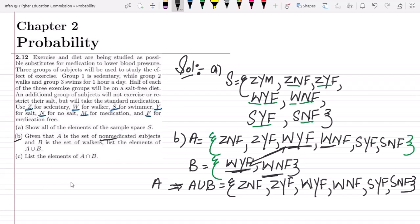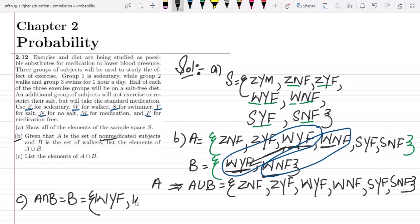Similarly, in the last part, list the elements of A intersection B. We have to see all the elements which are common in between them. We can very clearly see that these are the items which are common in between these two sets. Therefore, the A intersection B is B, which is WYF and WNF.